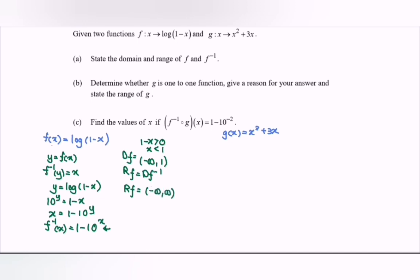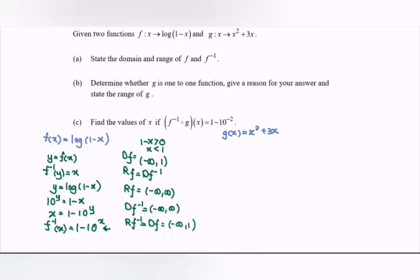So that is the domain and range for f and f inverse. The domain for f inverse is all real numbers. The range for f inverse equals the domain of f, which is negative infinity to 1, where 1 is not included.